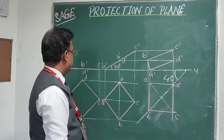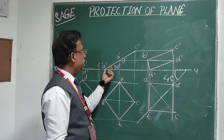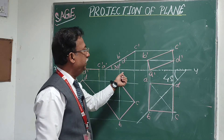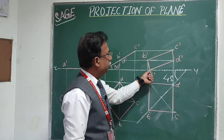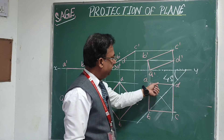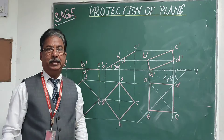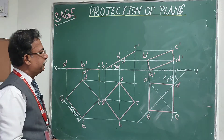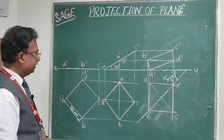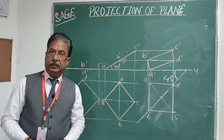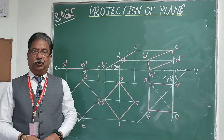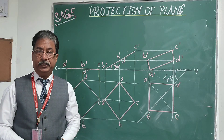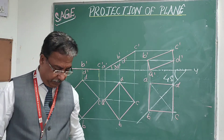Now look at the final solution: diagonal AC is inclined 30 degrees to the HP as required, corner A-dash is on the HP, and diagonal BD is inclined 45 degrees to the VP. This is a very interesting problem. I hope you understand the concept — try to draw this in your sketchbook or drawing sheet. Thank you very much.